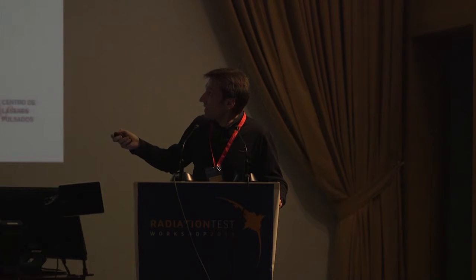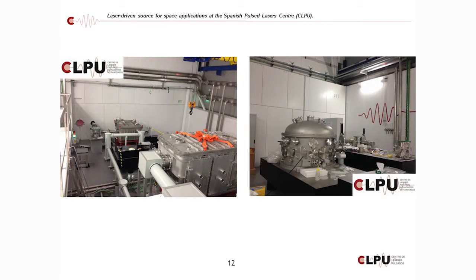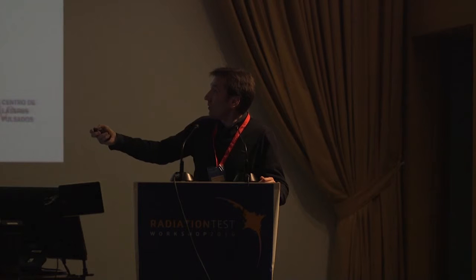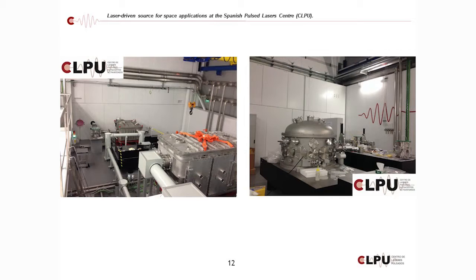These are the last phases of the amplification. Inside this chamber we have the compressors — the diffraction gratings for CPA technology. The smaller one is for the 200 terawatt output, and this larger one is the petawatt. Here is the target area: after compression, the laser passes through the last wall, comes into this shielded area, and enters the chamber where we focus the laser and achieve particle acceleration.